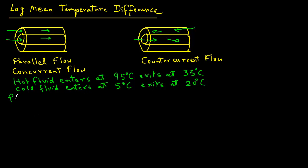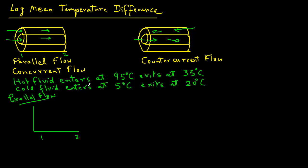If we consider parallel flow, let's first draw a temperature profile — this is always helpful for these types of problems. The Y-axis represents temperature and the X-axis is the length of the heat exchanger. We can identify point 1 and point 2. The lowest temperature given is 5°C and the highest is 95°C, with 35 and 20 falling in between on our scale.